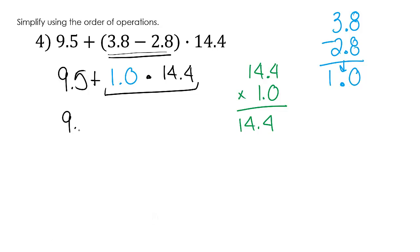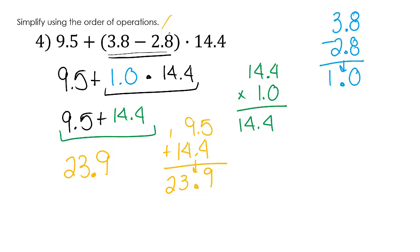So let's rewrite it. 9.5 plus 14.4. All right, so it looks like the only thing left is to add. So let's do it. Hopefully you see that I lined up my decimals. So let's add: 5 plus 4 is 9. Bring down my decimal. 4 plus 9 is 13. 1 plus 1 is 2. Great. It looks like our answer is 23.9. Now let's look at the question. It doesn't say anything about rounding. So this is it.